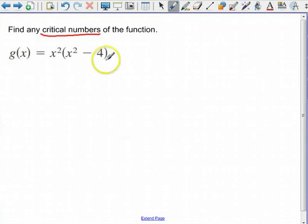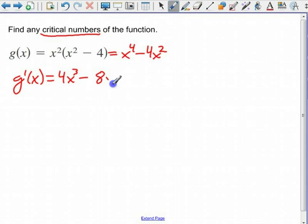So on this problem, let's find the critical numbers. I'm going to distribute the x squared. I'm going to take the derivative using the power rule and I'm going to set it equal to 0.